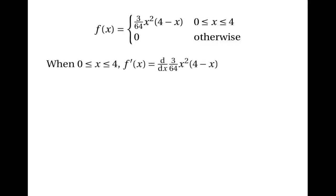We need to find the maximum point on this graph. In order to find the maximum, we need to do some differentiating — we need to find the derivative of the probability density function. So we differentiate (3/64) · x² · (4 − x). We can take the 3/64 outside and write it as (3/64) times the derivative of x² · (4 − x).